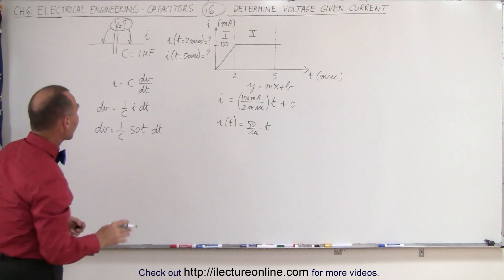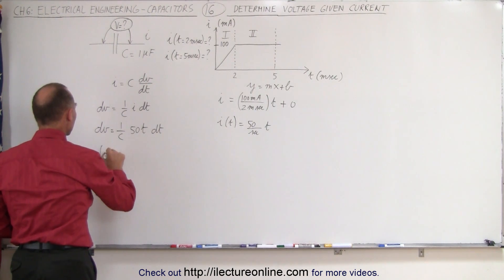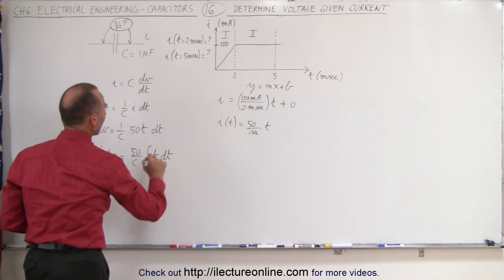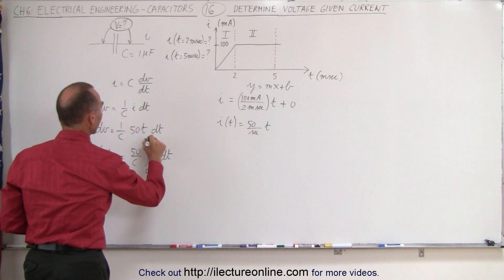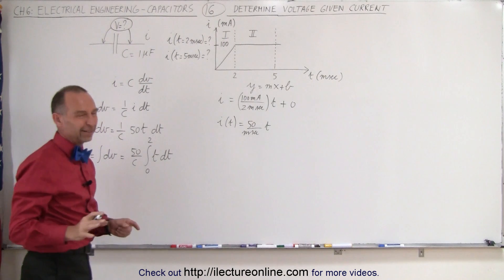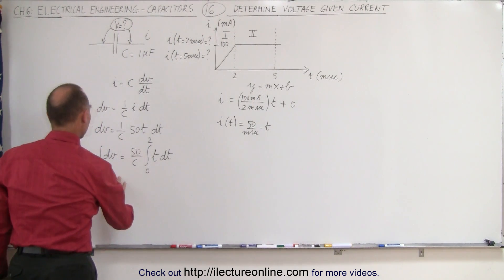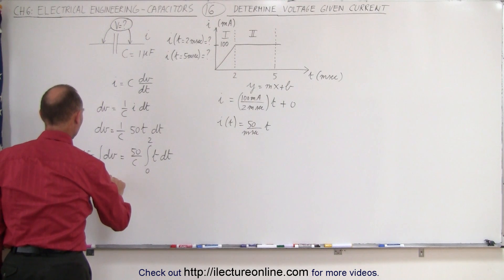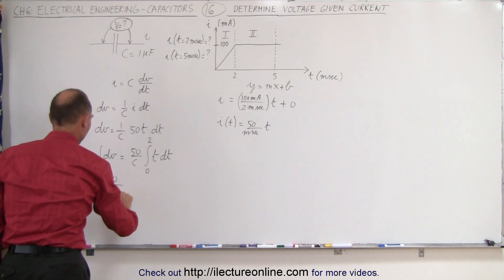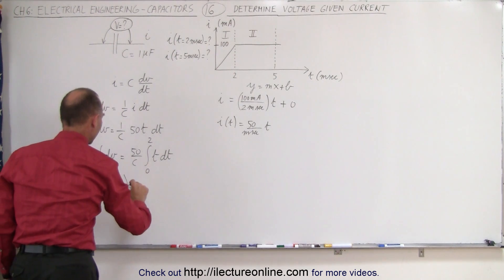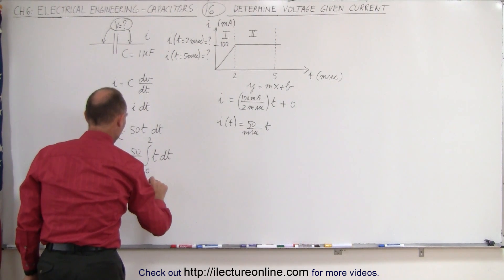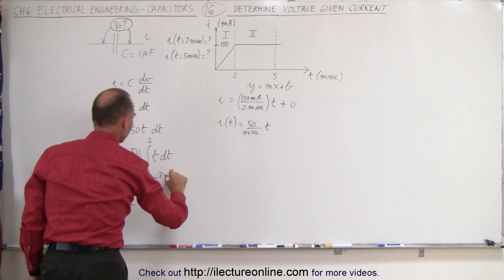We can now integrate both sides. The voltage equals the integral of dV, which equals 50 divided by the capacitance times the integral of T dT. We'll evaluate that from time equals 0 to time equals 2 milliseconds. The capacitance is 1 microfarad, and the integral of T dT is T squared over 2, evaluated from 0 to 2 milliseconds.